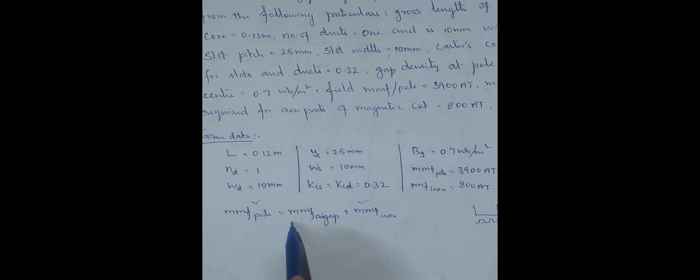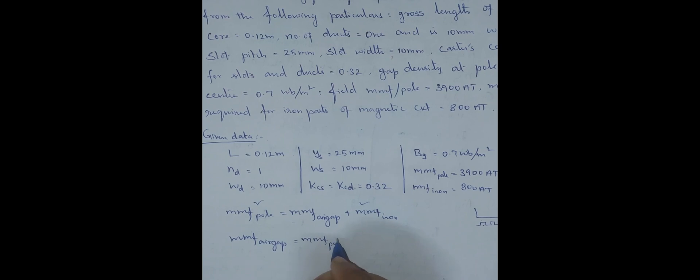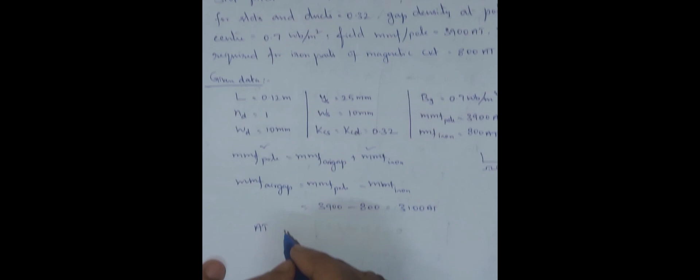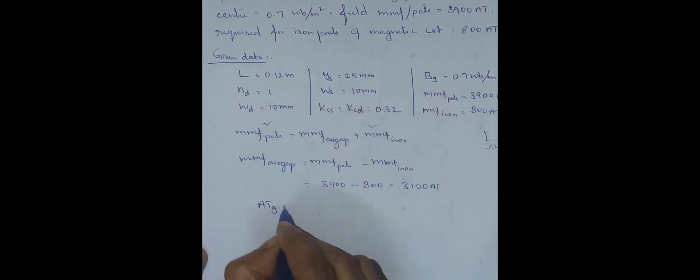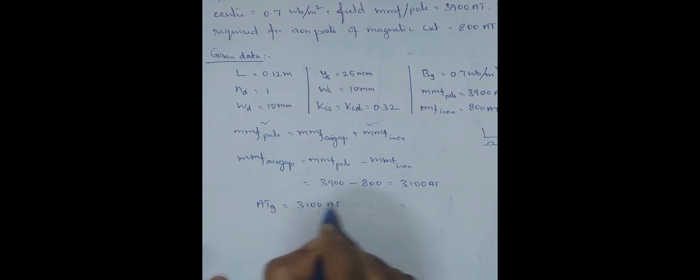The iron part is nothing but the tooth. We are given the MMF at pole and the MMF in iron parts, so we can find the MMF in the air gap. MMF in air gap equals MMF at pole minus MMF in iron parts: 3900 minus 800, which gives us 3100 ampere turns. So ATG — MMF in the air gap — is 3100 ampere turns.